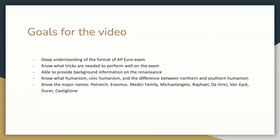Some key terms we'll go over include humanism, civic humanism, and the difference between northern and southern humanism, as well as the northern and southern Renaissance in general. I'm about 95% sure most of you don't know these terms yet, so hopefully you get introduced to them. Major people we'll cover include Petrarch, Erasmus, the Medici family, Michelangelo, Raphael, Da Vinci, Van Eyck, Dürer, and Castiglione. Make sure to remember these major names and what they did.